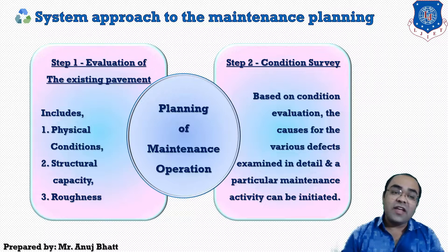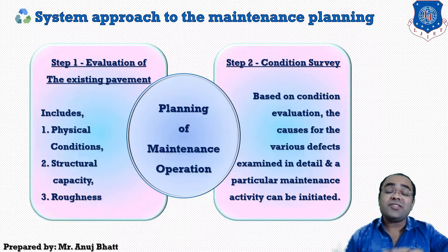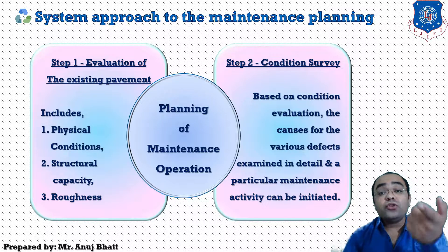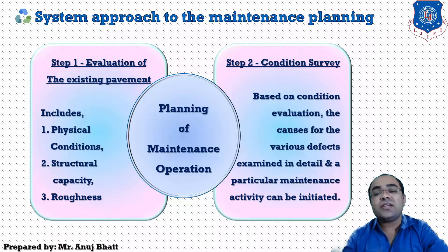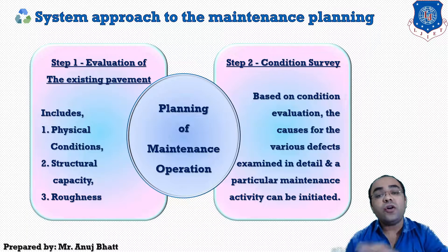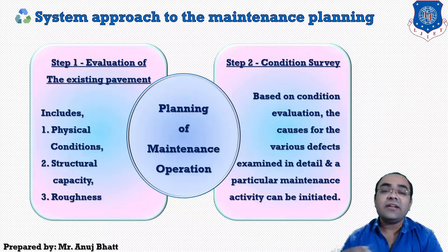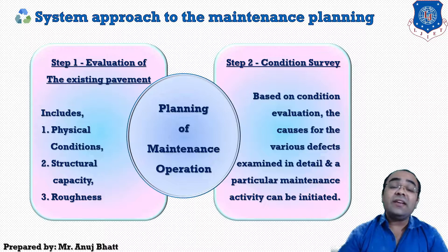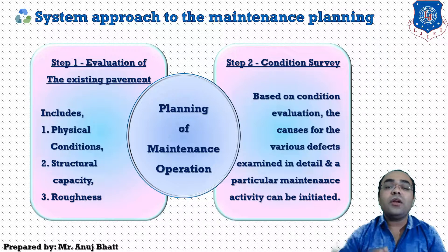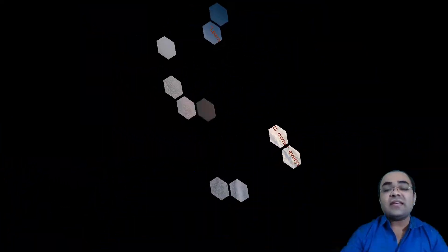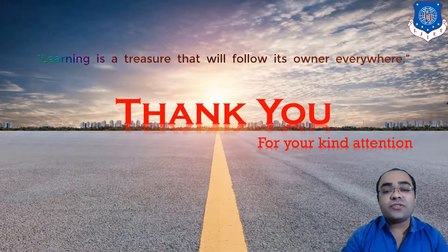For each maintenance activity, the work at site should be carefully controlled so that optimum output and quality can be achieved. First we do the physical survey based on physical condition, structural capacity, and roughness of the pavement. We evaluate the existing pavement condition, and a detailed condition survey gives the type of defects and detailed information about pavement failure. After checking the condition survey by visual examination, a final decision should be taken whether to reconstruct the road or to repair or rehabilitate that particular pavement.